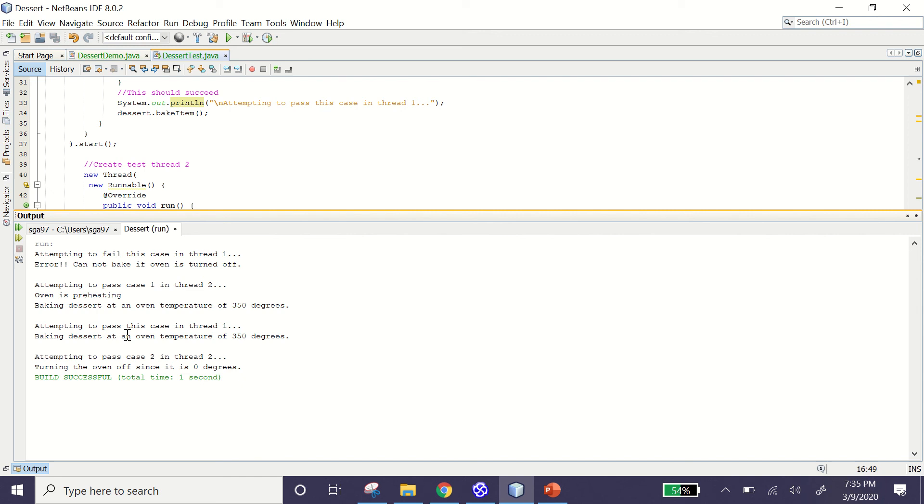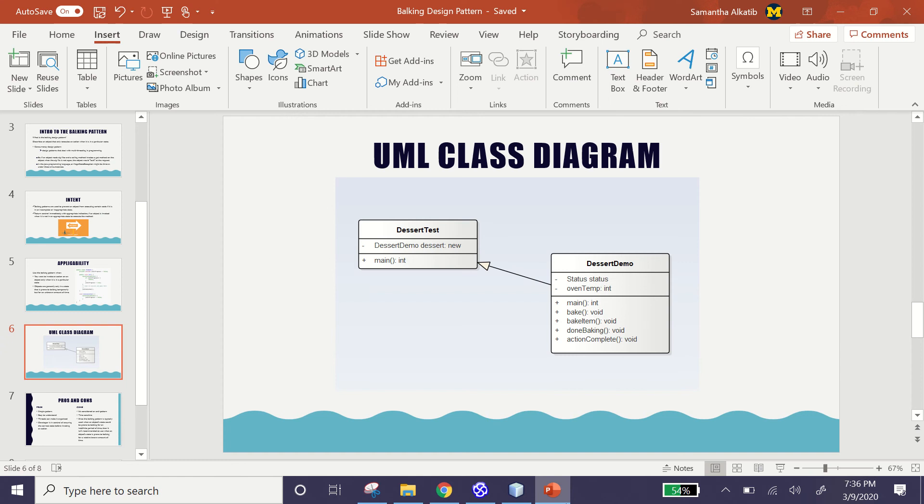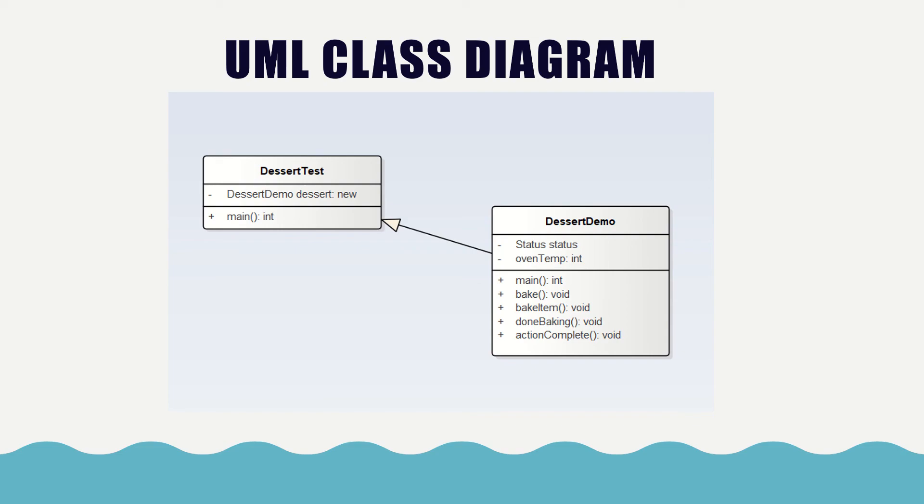Then for the final test case, we have an attempt to pass case two in thread two. And then this one is if the degree temperature was less than 350, it should turn the oven down to zero degrees. And that means that it's going to turn the oven off since it is zero degrees.